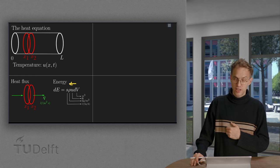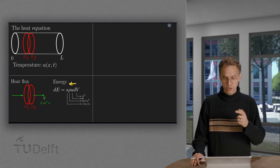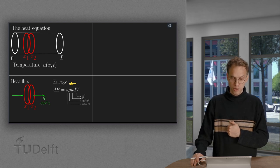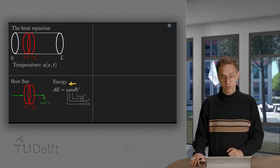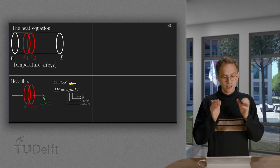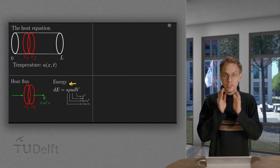The S has a unit joule per kilogram Kelvin, times density, kilogram per cubic meter, will give us a joule per cubic meter Kelvin, times the Kelvin, will give us a joule per cubic meter, times the cubic meter, will give us a joule, which is indeed the correct unit. So, that is the energy within this small segment.